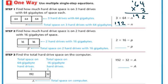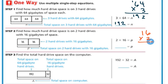Now I'm going to find out how much space is on two hard drives with 16 gigabytes of space. We don't know how much that is total, so I do 2 times 16. So 16 times 2: 6 times 2 is 12. Regroup my 1. 2 times 1 is 2 plus my regrouped 1 is 3. So p equals 32.